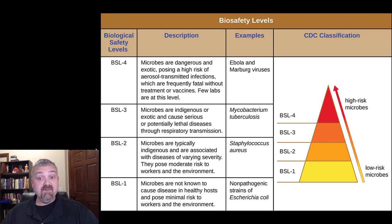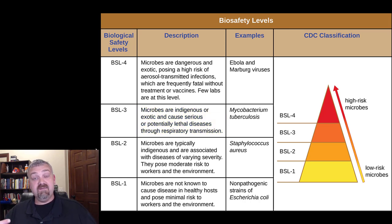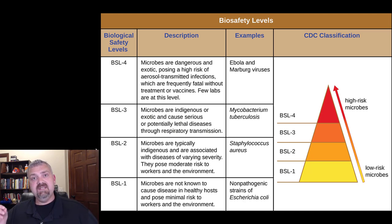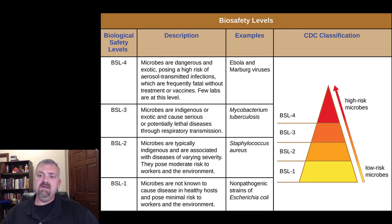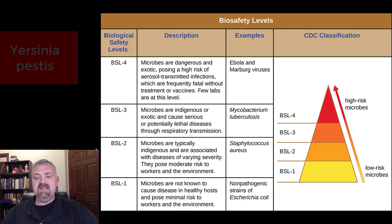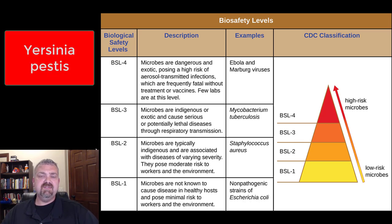BSL 3 organisms — biosafety level 3 — microbes are indigenous or exotic and cause serious or potentially lethal diseases through respiratory transmission. You need to be super careful here, taking extra precautions to make sure you don't breathe them in. These are generally diseases where treatments and vaccines are available. The example here is Mycobacterium tuberculosis. Another BSL 3 organism would be Yersinia pestis, which is the cause of the plague — the Black Death. Nobody wants to get that.